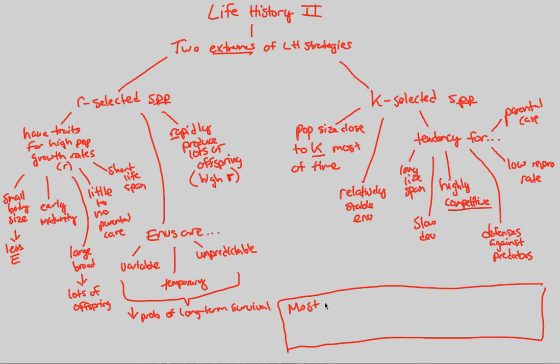Most populations have both R and K-selected characteristics that vary. When we say R and K-selected characteristics, we mean things like long lifespan, slow development, little to no parental care, short lifespan - all of these things as a conglomerate. Most populations have both R and K-selected characteristics that vary. These characteristics themselves fluctuate.